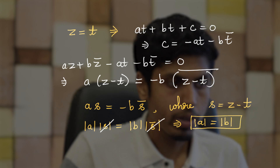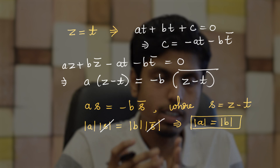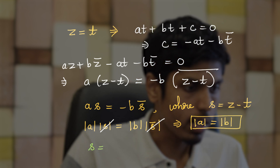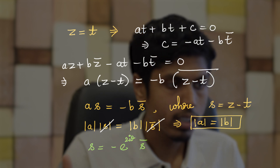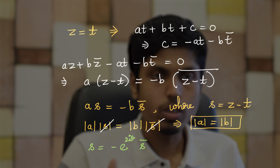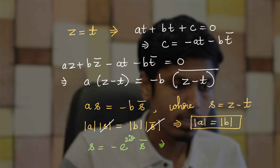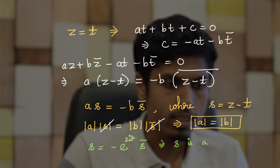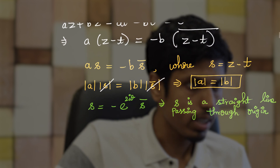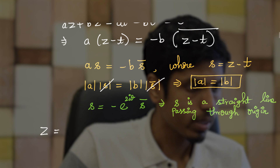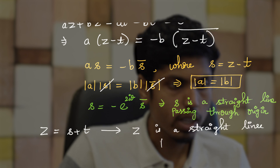Now, |a| = |b| means a and b have the same magnitude, so they cancel to give s = −e^(2iθ)·s̄, where we write a = re^(−iθ) and b = re^(iθ). This implies s represents a straight line passing through the origin, and since z = s + t, z represents a straight line passing through (t, 0).